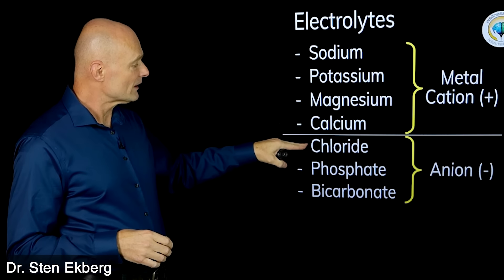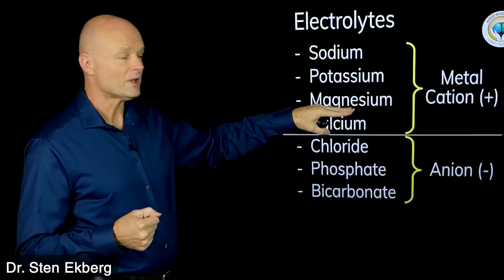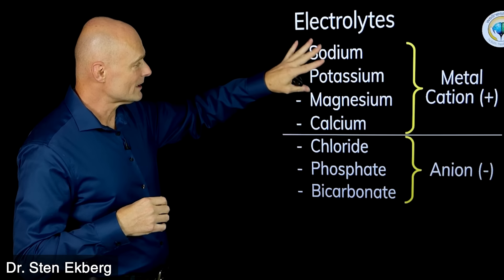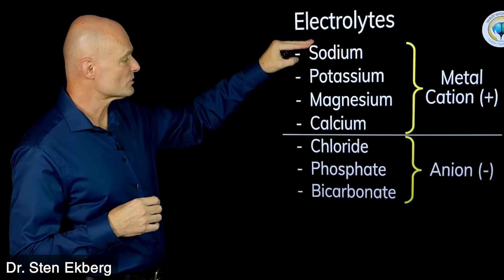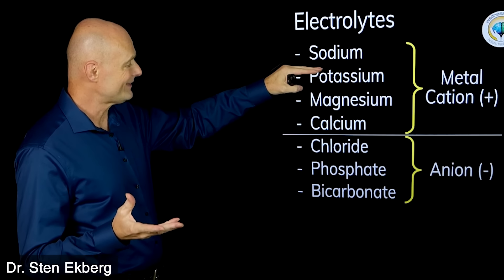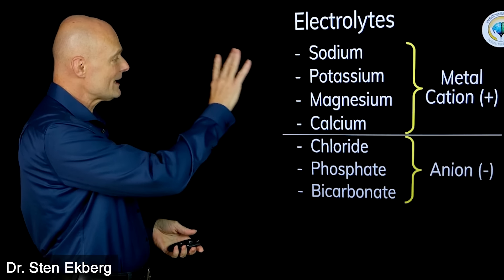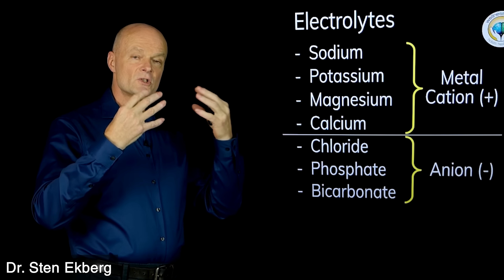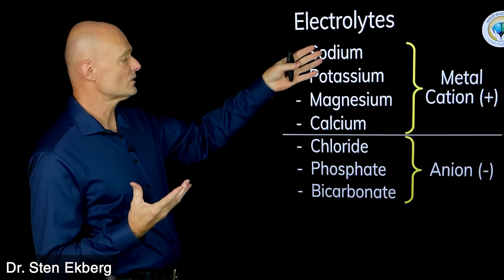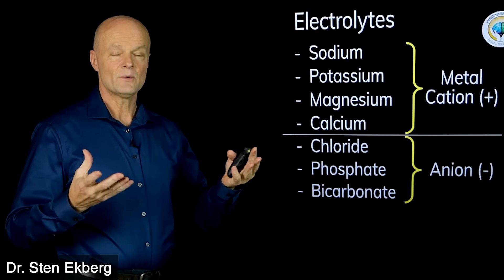Now the stuff at the bottom here—chloride, phosphate, and bicarbonate—these are the opposite of the metals up top. These form negative ions; they try to gain an electron. So the stuff on the top combines with the stuff on the bottom: sodium and chloride, for example, which is table salt. But you could also have potassium chloride or sodium bicarbonate. That's just the way that they are attracted, the way we consume them, and also very often how they go together in the body.